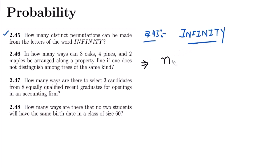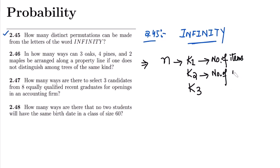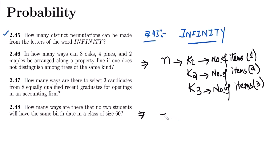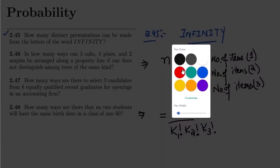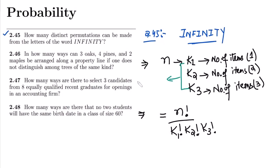If we have the total number of items equal to n, and it is composed of items k1, k2, k3 — where k1 is the number of items of the first type, k2 the number of the second type, and k3 the number of the third type — then the total number of permutations is n factorial divided by k1 factorial times k2 factorial times k3 factorial. The condition is that n equals k1 plus k2 plus k3.